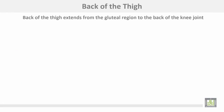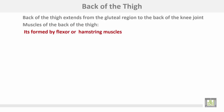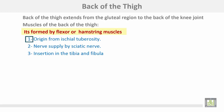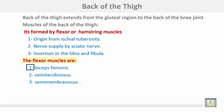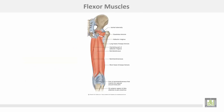The back of the thigh extends from the gluteal region to the back of the knee joint. The muscles forming the back of the thigh are the flexor or hamstring muscles. All these muscles take origin from the ischial tuberosity, are supplied by the sciatic nerve, and insert into the tibia and fibula. These muscles are biceps femoris, semitendinosus, and semimembranosus. This is the biceps muscle, and semitendinosus covering the semimembranosus muscle.